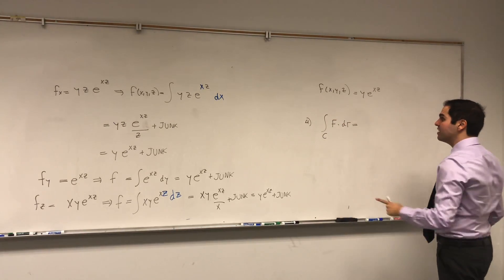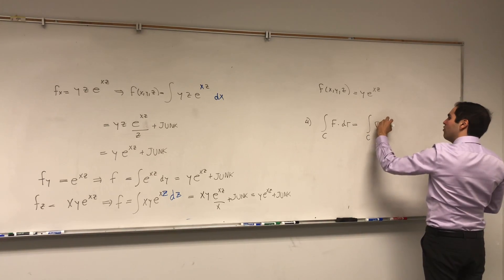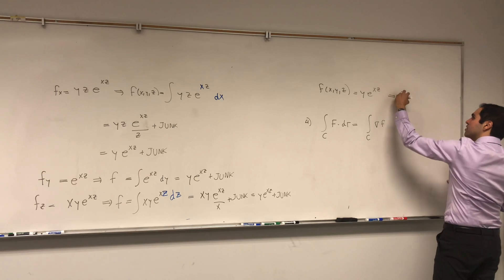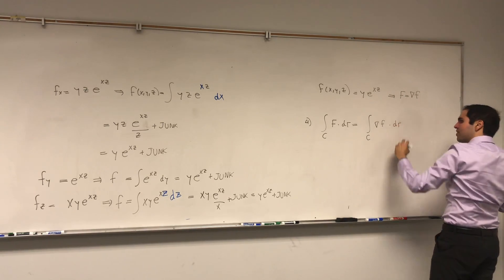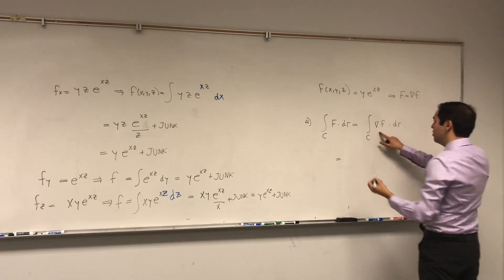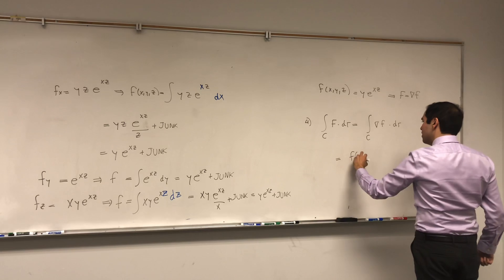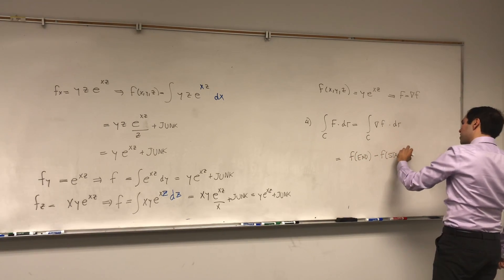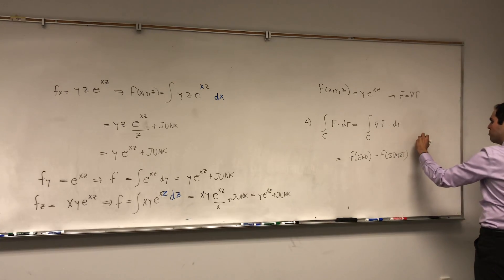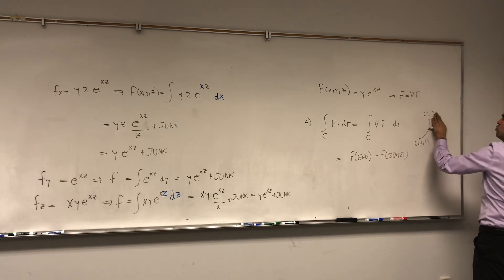So now, the line integral of this really complicated thing becomes the line integral of now the gradient of f. So what we found is that f is the gradient of f of this, which just becomes now by the fundamental theorem of line integrals, it's just f of the end point minus f of the starting point. And remember, we started at 1, 1, 1, and we went up to 2, 4, 8.